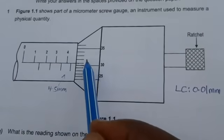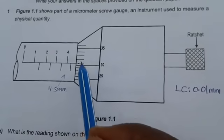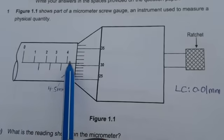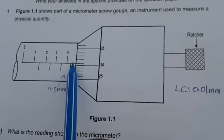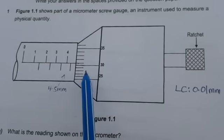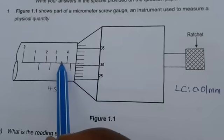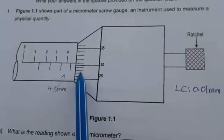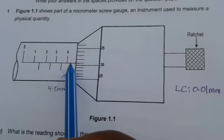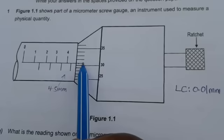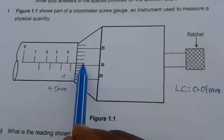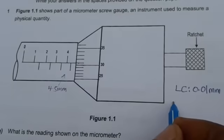How do you collect the measurements from the thimble? You look for where the center line of the sleeve scale and that of the thimble scale are coinciding. This one is not coinciding with this center line, this one not, this one no, this one no, this one no. But this one is coinciding with this. So we need to take this measurement here. This is 30, then 31. So this is 31.